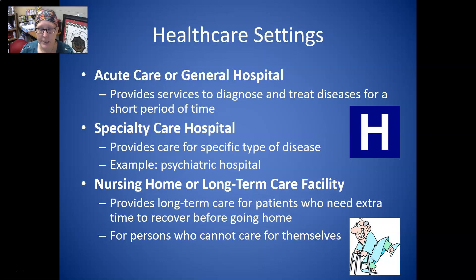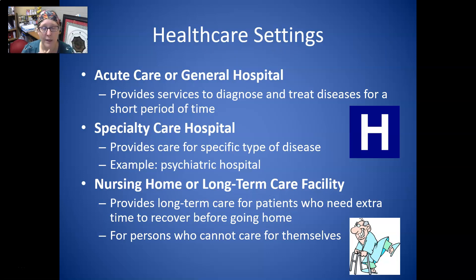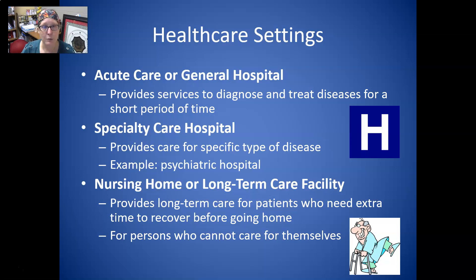Now let's look at healthcare settings. Acute care or general hospitals provide services to diagnose and treat disease for a short period of time, and generally they have an emergency room for emergent care. Specialty care hospitals provide care for a specific type of disease — for example, a psychiatric hospital, or renowned cancer hospitals like MD Anderson in Houston.